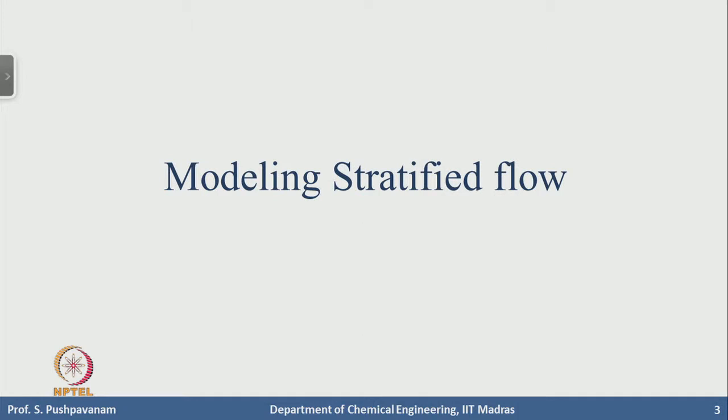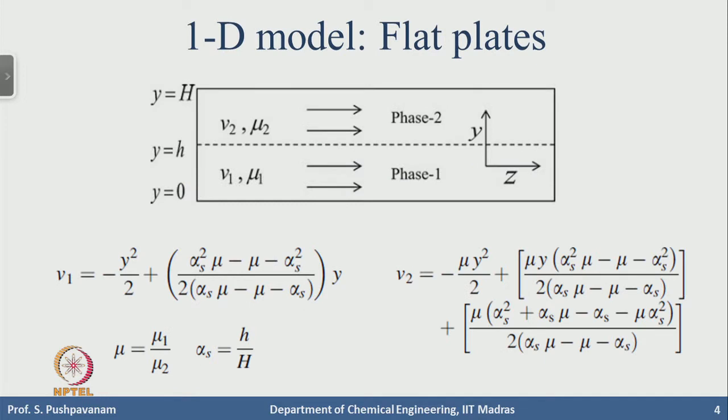We can look at the models that we used. This was the model that we looked at in class where we had two infinite plates in the x direction in this case, flow in the z direction and we were looking at how the velocity profile was in the y direction. We had two fluids phase 1 and phase 2 and then applying the simplifications to the Navier-Stokes and the boundary conditions you would have been able to derive the velocity profiles which are given here. Note that the viscosity ratio here is mu and alpha s is the hold up or the thickness ratio.